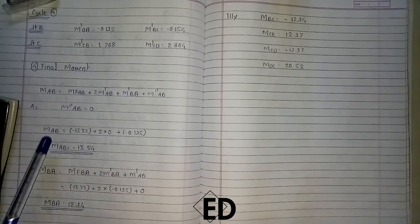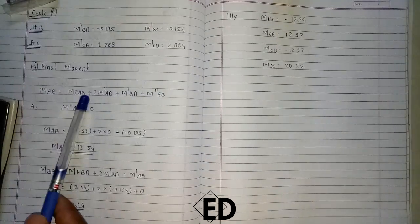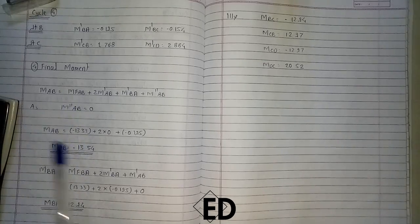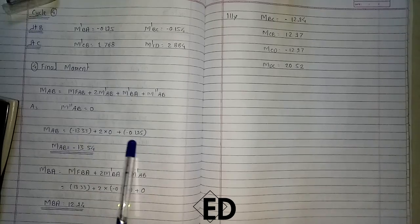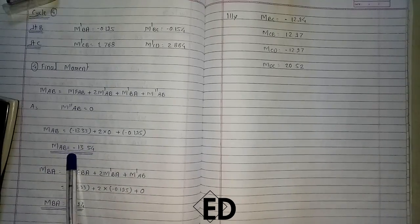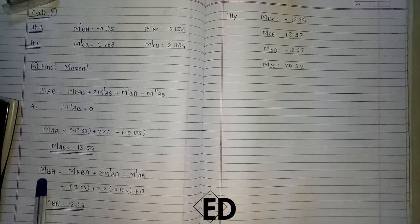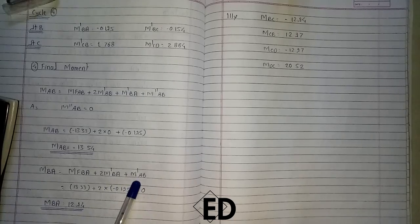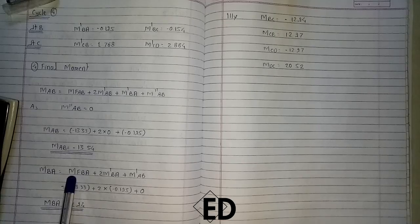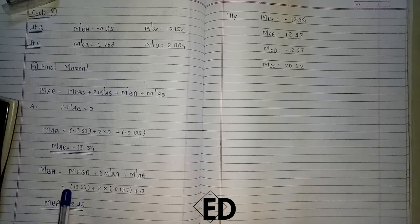From the cycles, MFAB = minus 13.33, the rotational contribution from A to B is 0 (support A is fixed), and the rotational contribution from B to A is minus 0.195. Calculating this gives the moment from A to B as minus 13.5 kNm. Similarly for B to A: MFBA = 13.33, plus 2 times minus 0.195, plus rotational contribution from A to B which is 0. This gives MBA = 12.94 kNm.